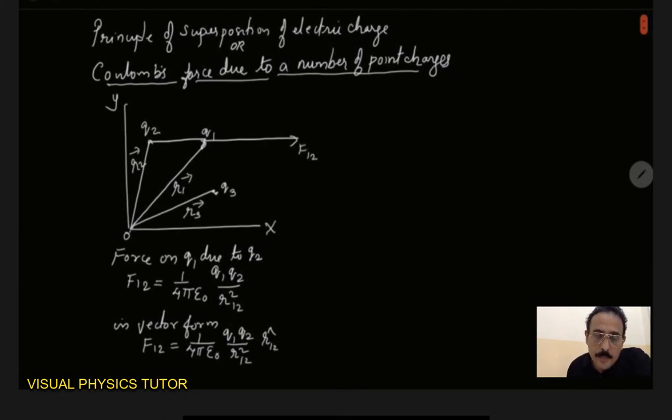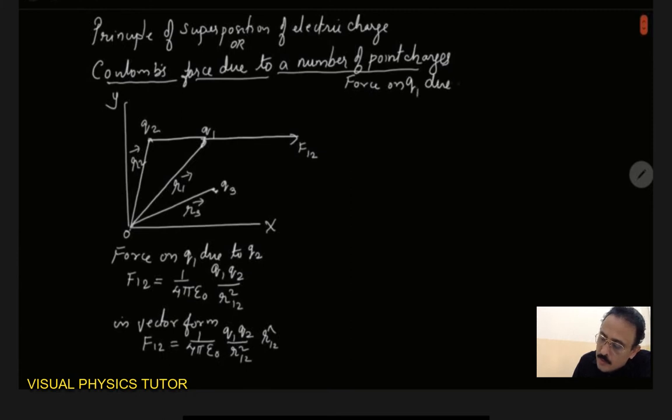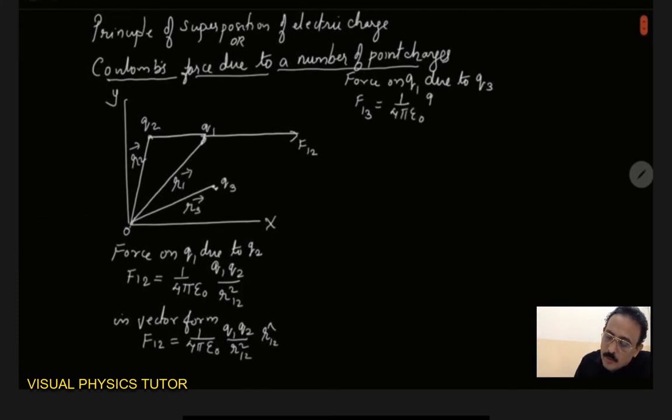Now similarly, you can take the force on q1 due to q3. So this can also be written as F13 is equal to 1 by 4 pi epsilon 0, q1 q3 by r13 square.